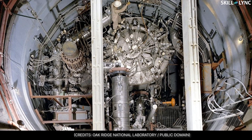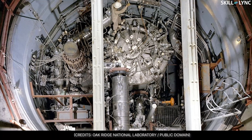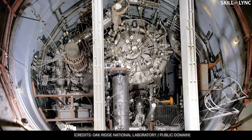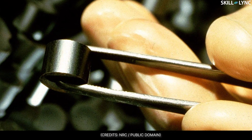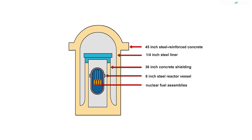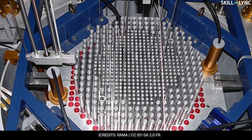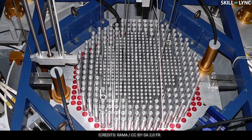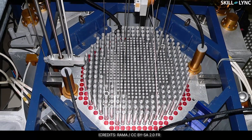Now, let's discuss the core of the nuclear reactors. The core is where the fission reaction takes place. The fuel is usually uranium assembled by means of fuel pellets. The core has a shielding in order to stop the radiation from leaking. Thus, the reaction is controlled and a proportional amount of power is produced in the nuclear reactor.